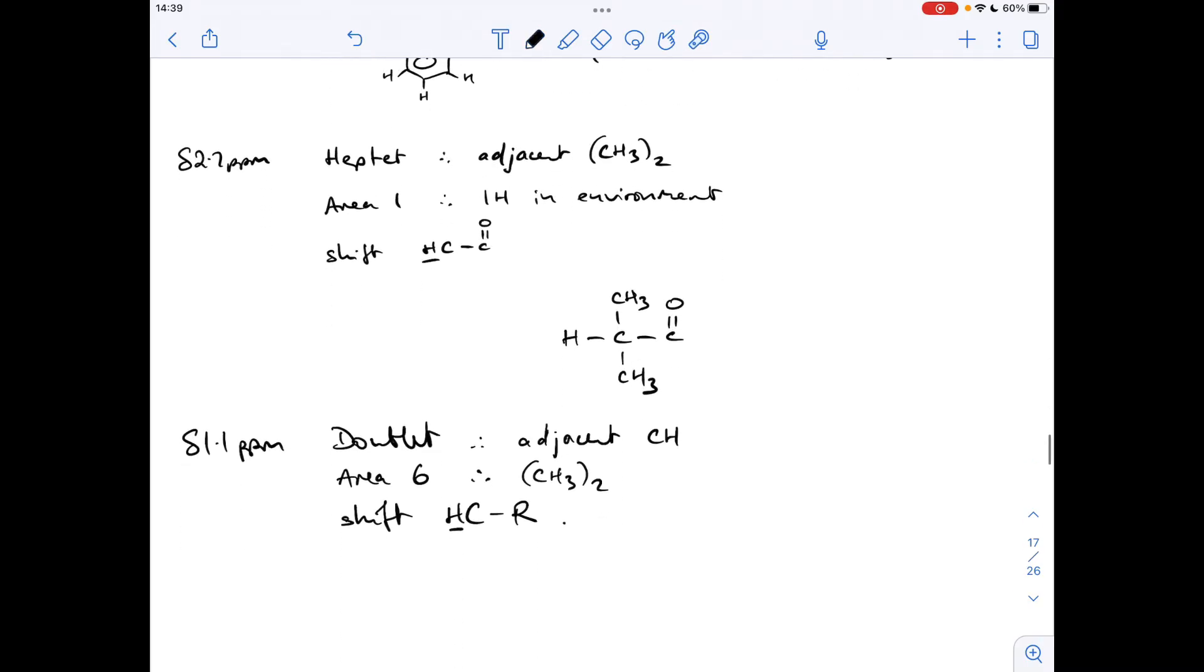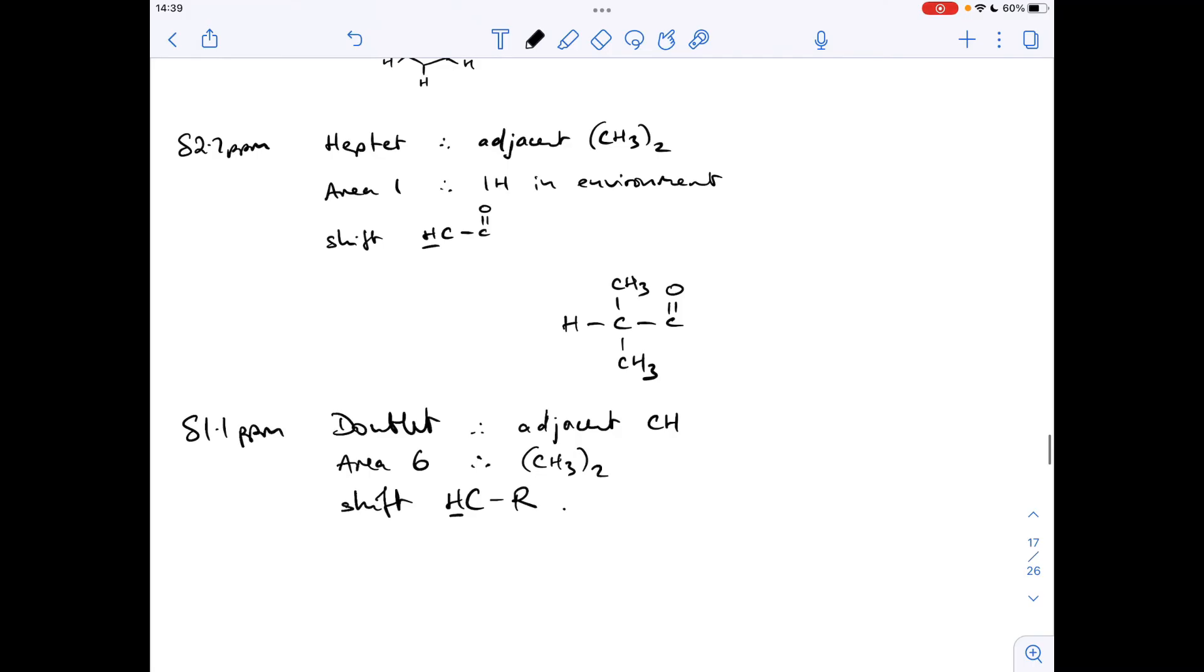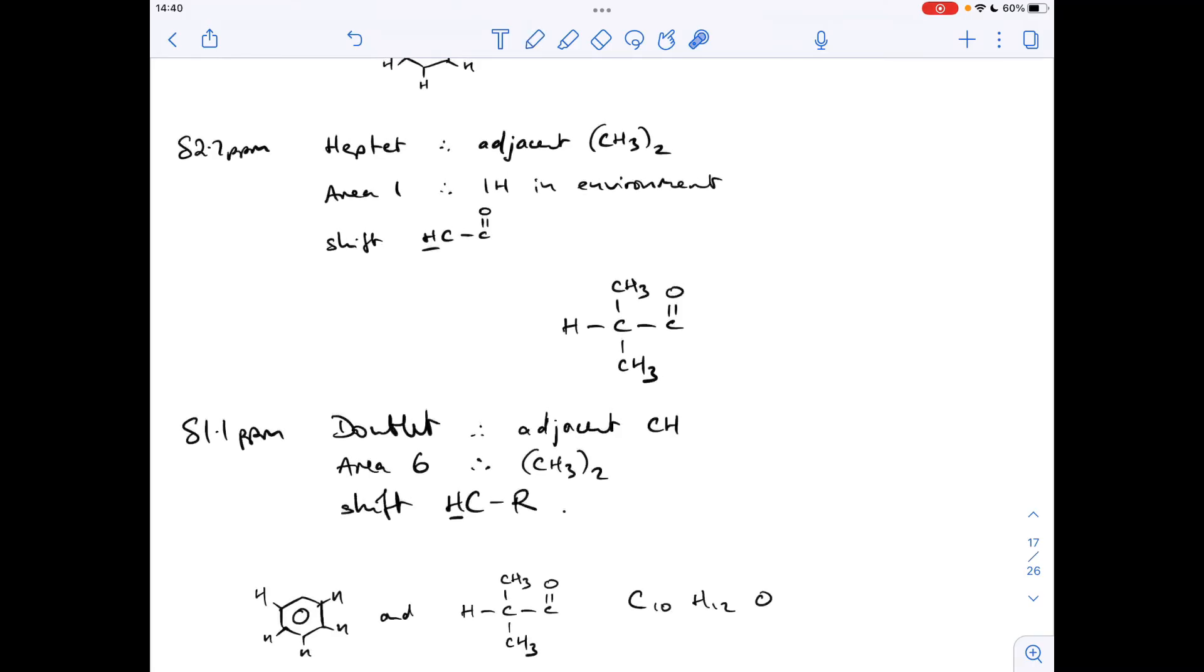So that's it for the peak. If we just put together and summarize what we've found out so far: these are giving us 10 carbons, 12 hydrogens, and a single oxygen. So all we're missing is an oxygen. So the structure looks like this.